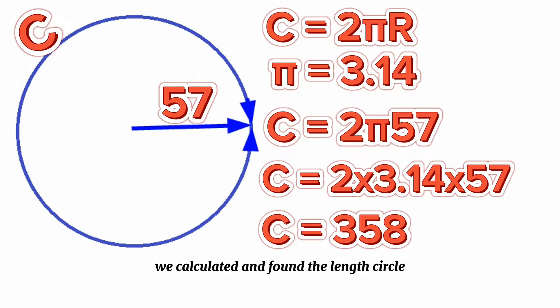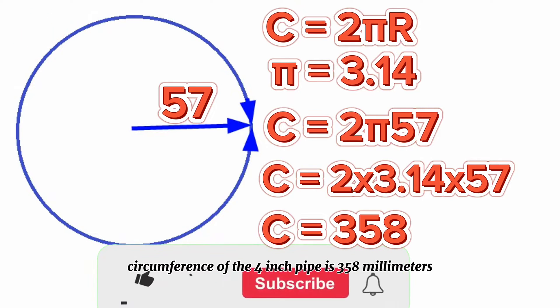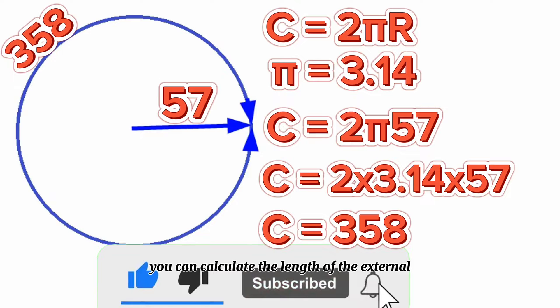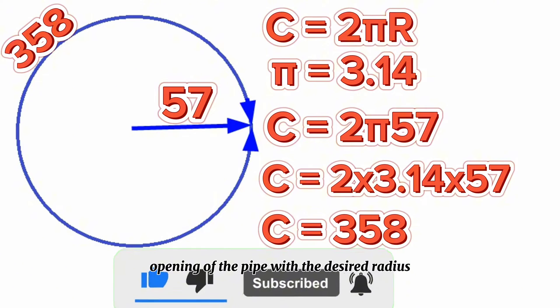We calculated and found the length of the circle circumference of the 4-inch pipe is 358 millimeters. With this formula, you can calculate the length of the external opening of the pipe with the desired radius.